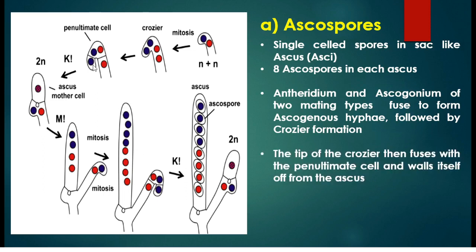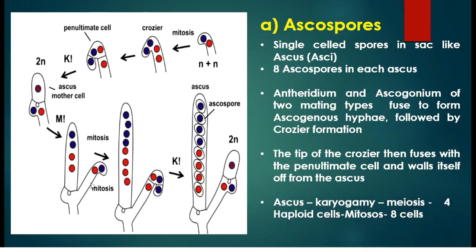The ascus usually forms as a radiating spur branch at the top of the hook from the penultimate or second-last cell. The tip of the crozier then fuses with the penultimate cell and walls itself off from the ascus by formation of a septum. The nucleus from the crozier migrates into the penultimate cell, thus maintaining the dikaryotic stage of the ascogenous hyphae. Below the base of the ascus these nuclei migrate into a growing side branch capable of repeating the crozier formation process indefinitely. Within the ascus the two nuclei fuse to form the diploid zygote.